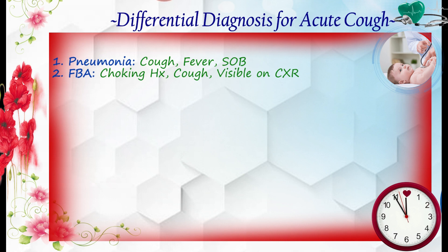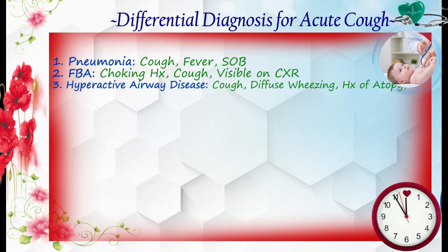We should consider foreign body aspiration. You have to ask the child whether he had any choking episodes — that is very suggestive history for foreign body aspiration. We then have to investigate with a chest X-ray; we may directly see the foreign body on the chest X-ray. The other differential is reactive airway disease.